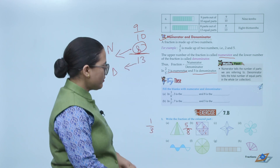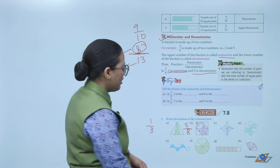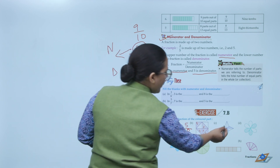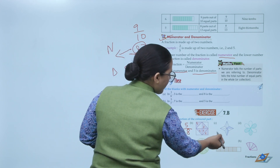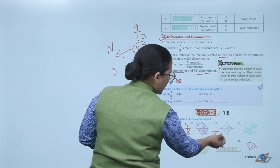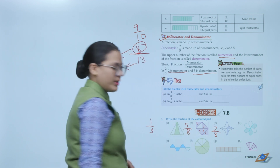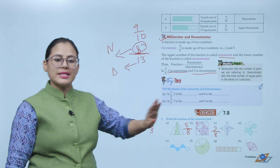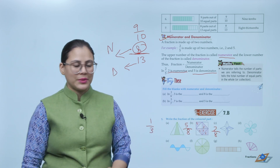In the next figure, there are 8 total parts and 2 are colored — so the fraction is 2 by 8. Similarly, you need to write the fractions for all the remaining figures.